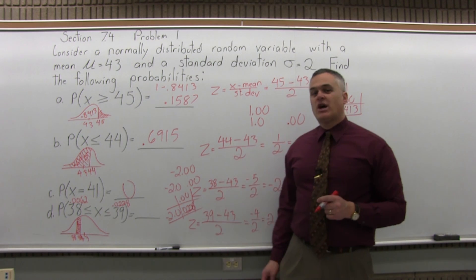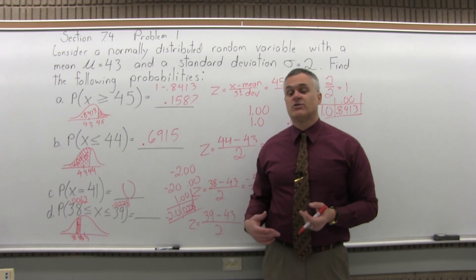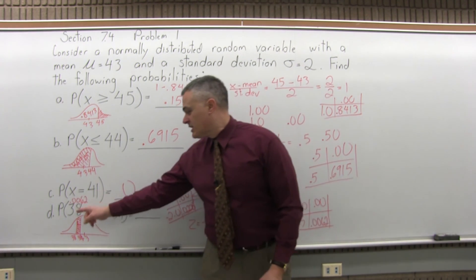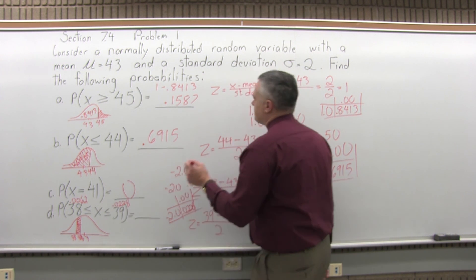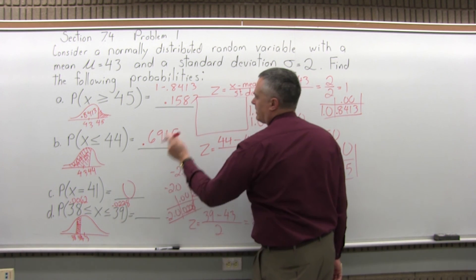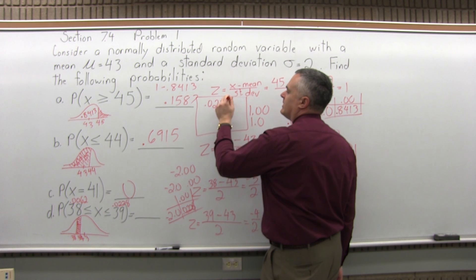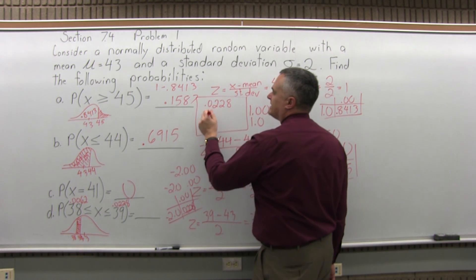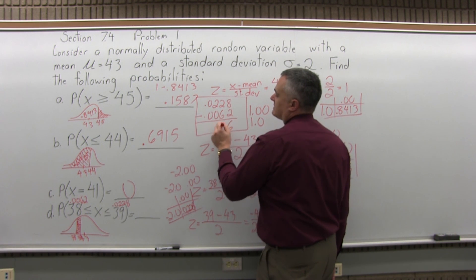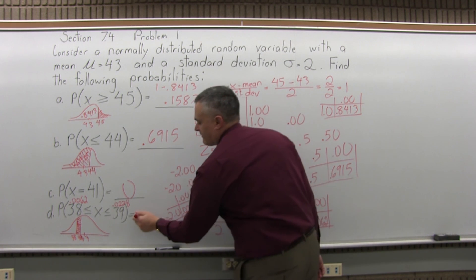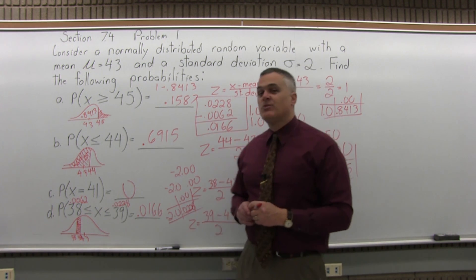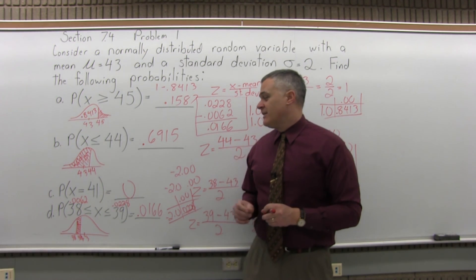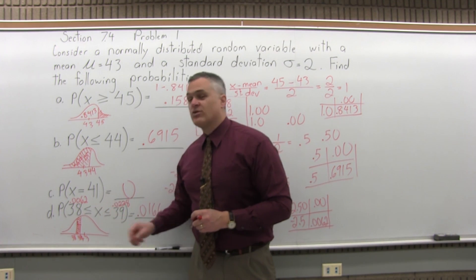Now with two chart values, subtract them in an order that gives a positive result, since probabilities can't be negative. Take the larger value, 0.0228, minus the smaller value, 0.0062, which gives 0.0166. So the final answer is 0.0166 — slightly more than a 1.5% probability that x will be between 38 and 39.